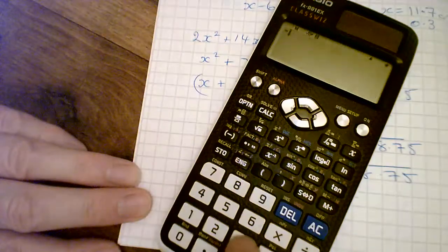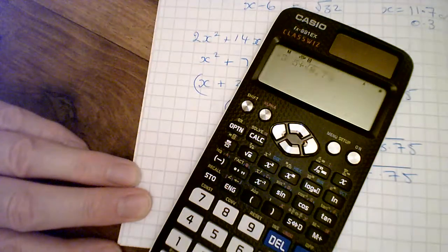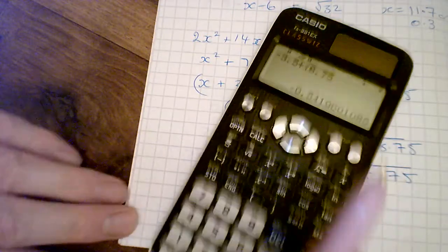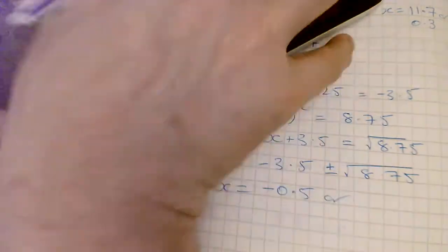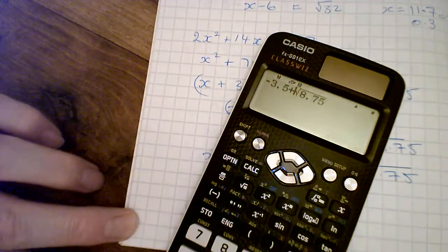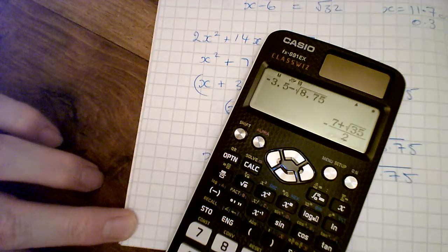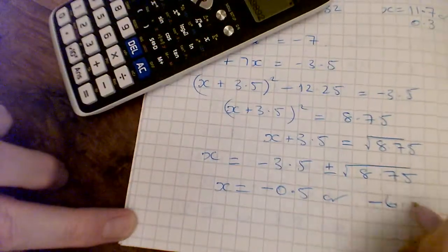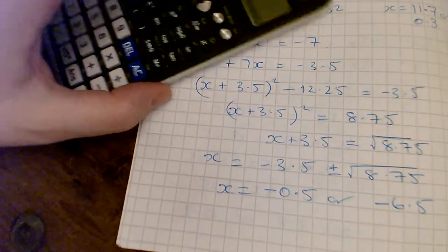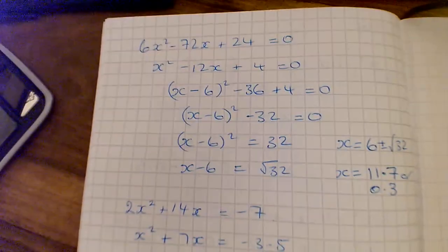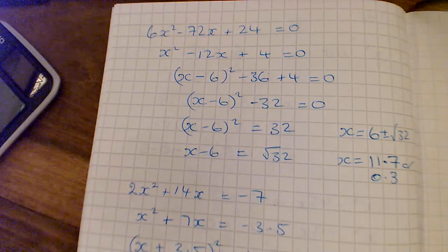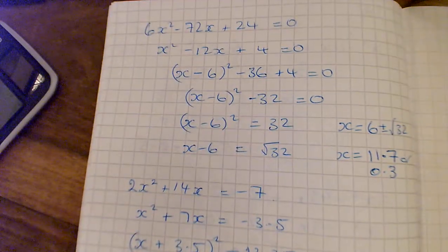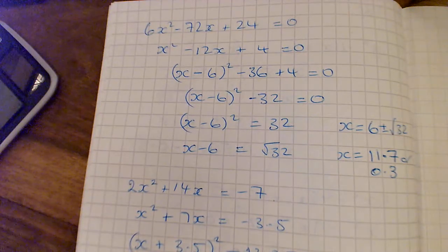On the calculator: minus 3.5 plus √8.75 gives minus 0.5 to 1 decimal place, and minus 3.5 minus √8.75 gives minus 6.5. And that's it for completing the square — quite a lot of work there. Completing the square is actually where the quadratic formula comes from. Top tip: get rid of that leading coefficient first. Good luck!